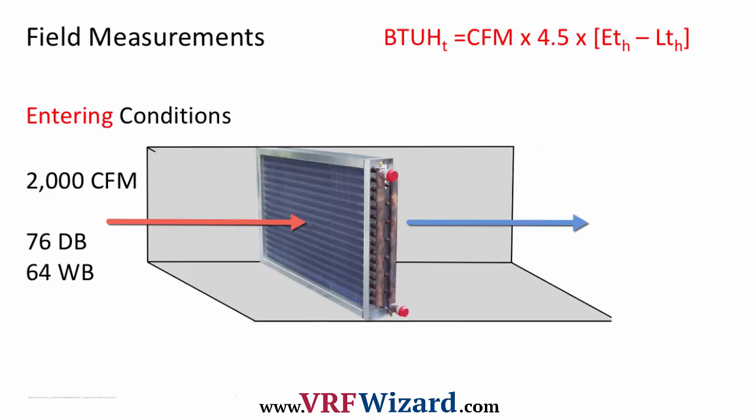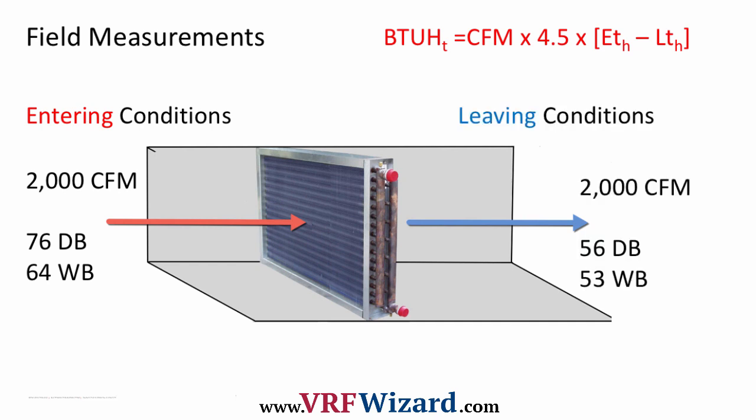We're going to measure our field conditions. In this example we have 2000 CFM entering the coil with a 76 degree dry bulb and a 64 degree wet bulb. Then we measure our leaving conditions: the same 2000 CFM, but now the air has been cooled down to 56 degrees dry bulb and 53 degrees wet bulb.